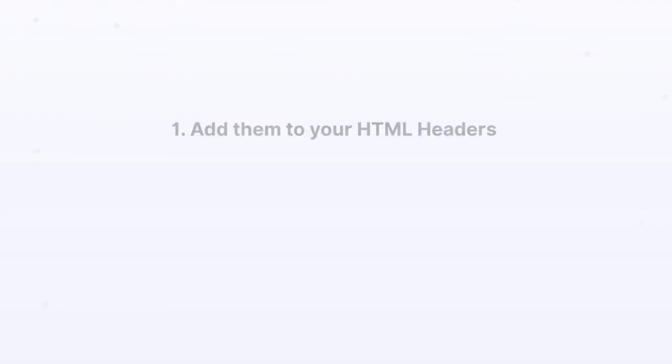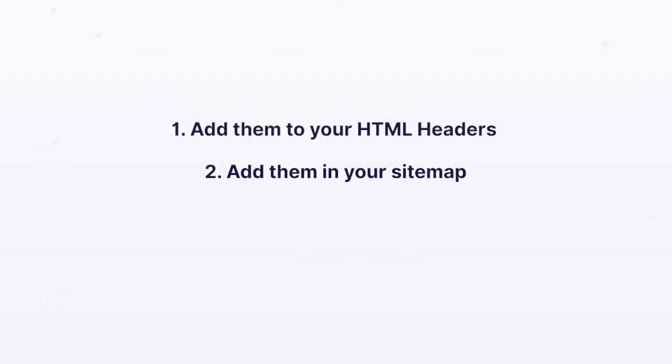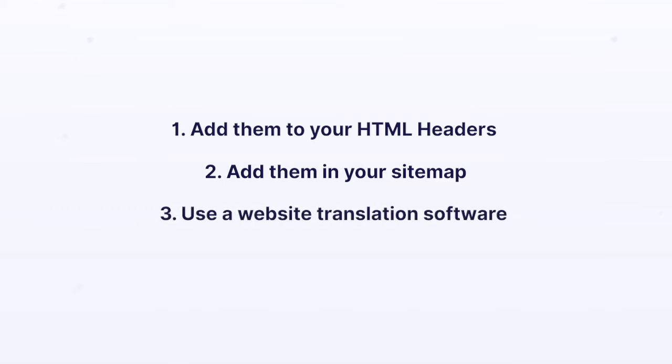So if you're not a developer, you're going to need some basic code skills and some HTML knowledge to help implement these on your website. As I mentioned at the beginning of this video, we're going to talk about how to implement your hreflang tags. There are three different ways you can do this: one, add them to your HTML headers; two, add them in your sitemap; or three, use a website translation software. Let's take a look at number one — add them to your HTML headers.